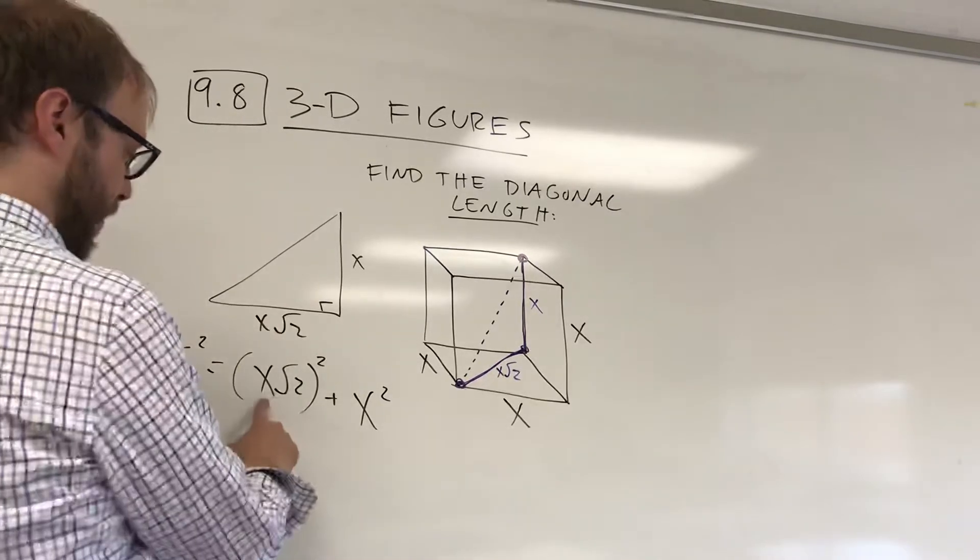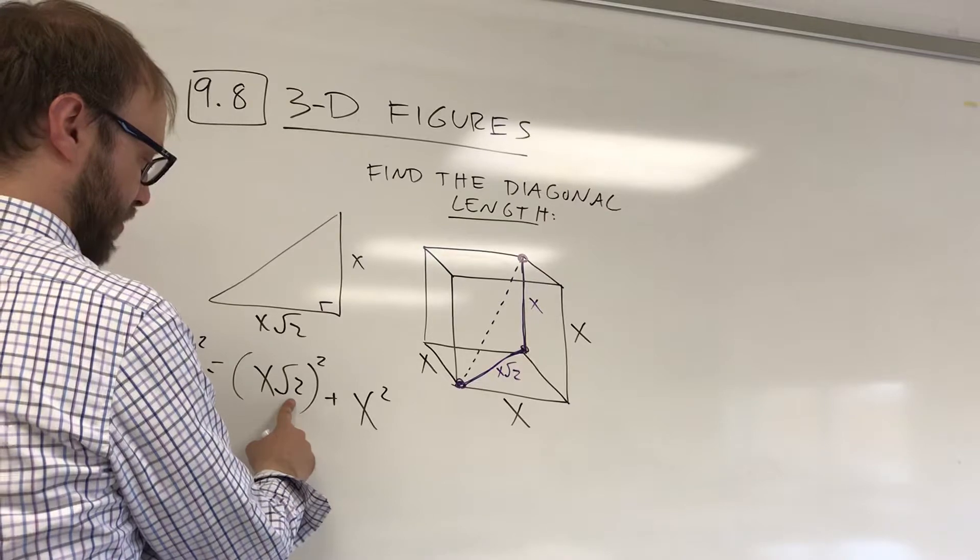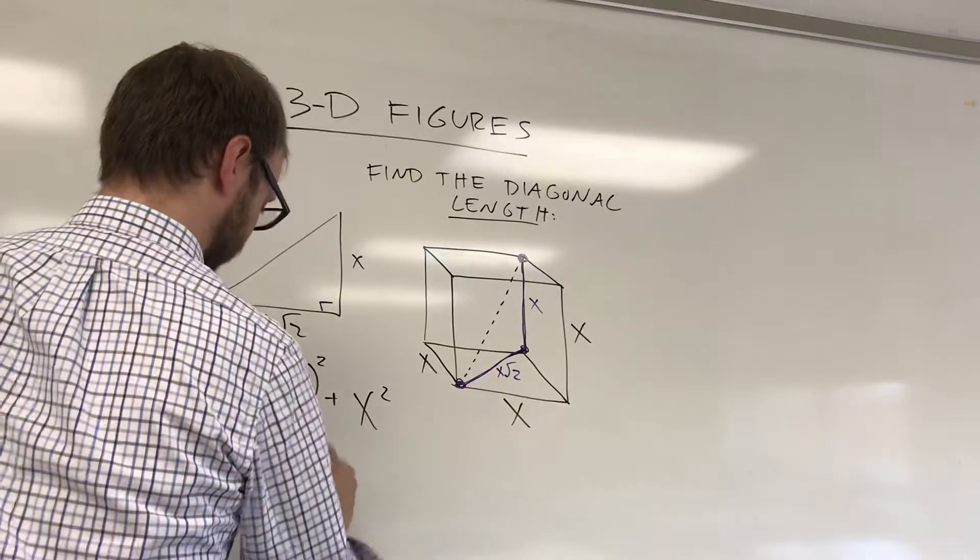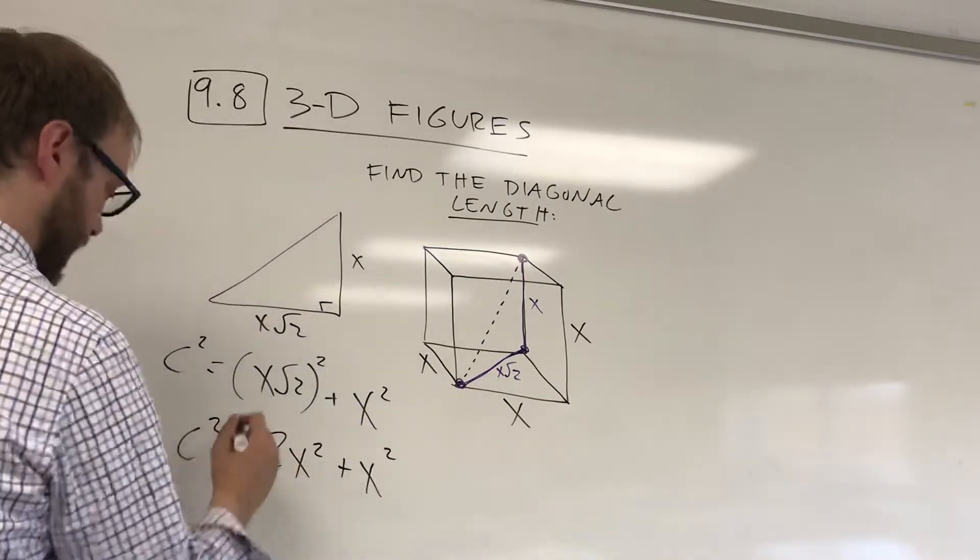So this square, that's x times x is x squared. Radical 2 times radical 2 is 2. So we have 2x squared plus x squared is equal to c squared.